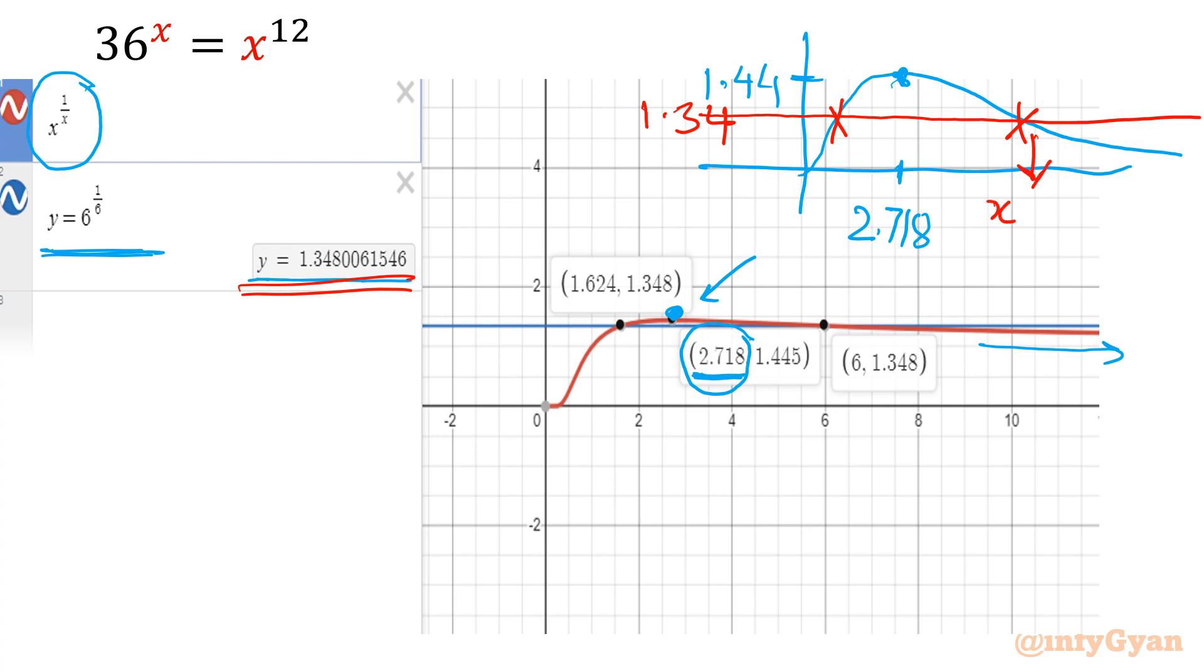This point is x equal to 6, which we calculated using exponential and ln. And second point is one point, what is that value? 1.624. See it is written. So first value is 1.624, so this is using Lambert W function.